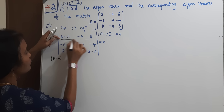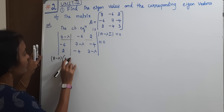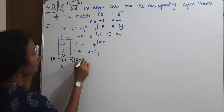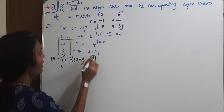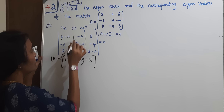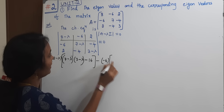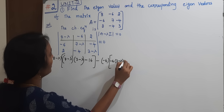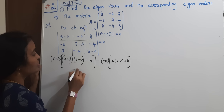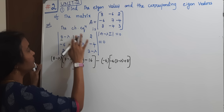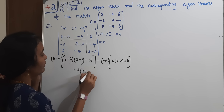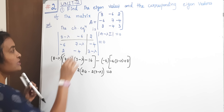Expanding the determinant along the first row: (8 minus lambda) times the minor [(7 minus lambda)(3 minus lambda) minus 16], minus (minus 6) times [minus 6(3 minus lambda) plus 8], plus 2 times [24 minus 2(7 minus lambda)] is equal to 0.